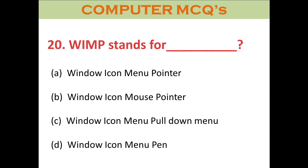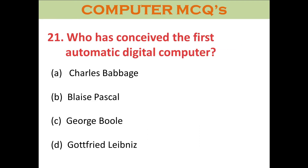Question twenty: WIMP stands for — A. Window Icon Menu Pointer. B. Window Icon Mouse Pointer. C. Window Icon Menu Pull Down Menu. D. Window Icon Menu Pen. The right answer is A: Window Icon Menu Pointer.